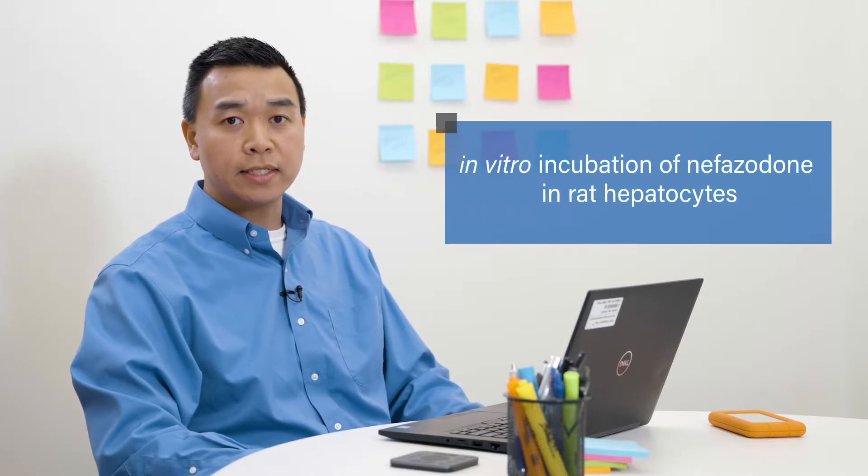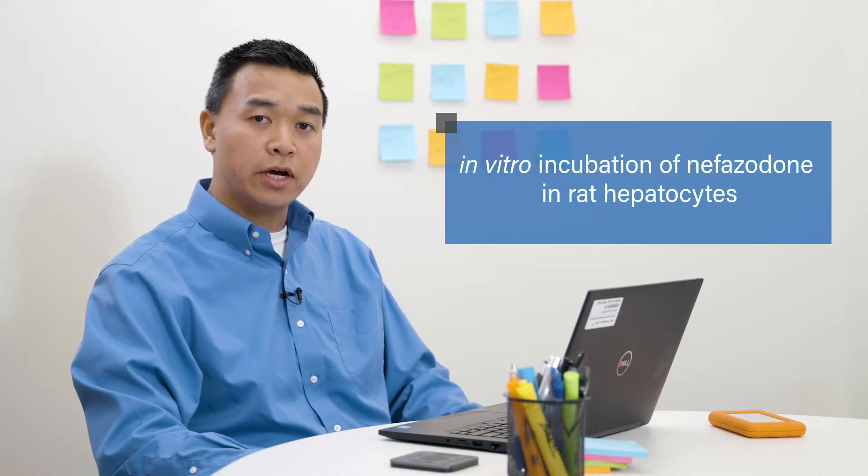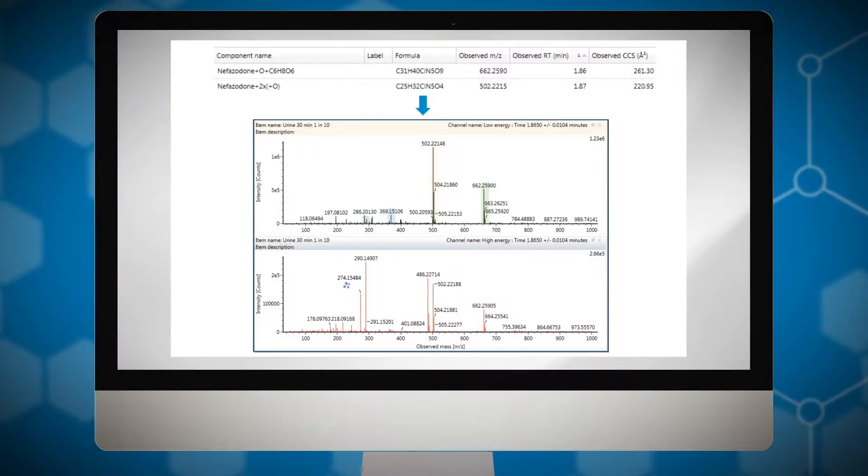To demonstrate the benefit of ion mobility and metabolite identification, we've analyzed an in vitro incubation of nifazodone and hepatocytes using our Vion IMS QTOF mass spectrometer. In this assay, we've detected two co-eluting metabolites of nifazodone, a dihydroxylated metabolite, and a hydroxylated glucuronide metabolite.